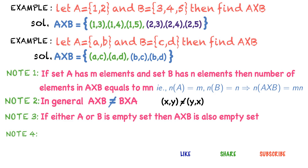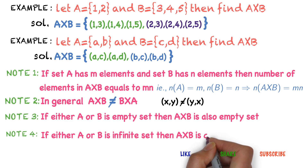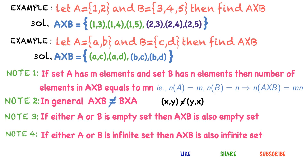Point four: If either A or B is an infinite set, then A cross B is also an infinite set. You can check this with an example: take set A as a non-empty set and set B as an infinite set, and A cross B will also be an infinite set.